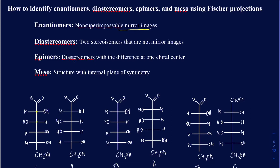So enantiomers are going to be the easiest one to recognize. When you put a sugar in front of the mirror, if two sugars you're comparing are enantiomers, their stereochemistry is just going to be flipped. If you have two stereoisomers and they are not enantiomers, then very likely they're going to be diastereomers. For something to be diastereomers, you're going to have to have at least two chiral centers — you could have more, but at least two chiral carbons.